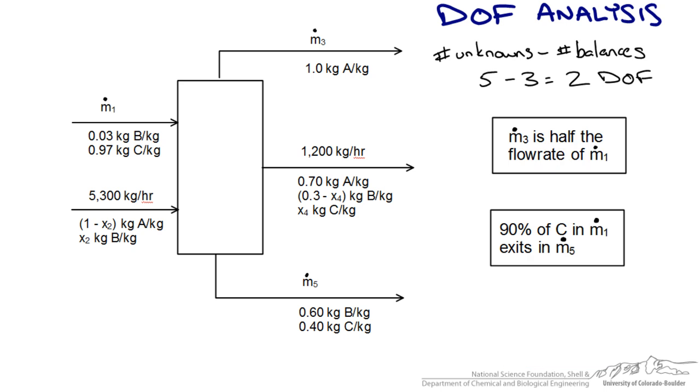So let's provide 2 more pieces of information that is going to allow you to solve this problem. First, the flow rate in M3 is half the flow rate of the feed stream M1. The second one, 90% of all of the C that enters in M1 exits in M5. So now this is 2 more pieces of information that we could use to solve. We could write mathematical equations for these statements that help us solve our unknowns. So when we go back to our degree of freedom analysis we are also going to subtract out the number of relationships or pieces of information that we could use. Now this is 5 minus 3 minus 2 which gives us 0. And 0 is the magic number that we know this problem is solvable.